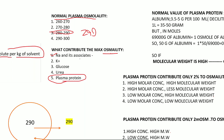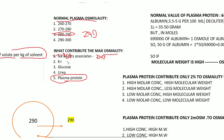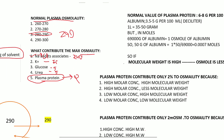What does 'sodium and its associates' mean? Sodium is always paired with chloride or bicarbonate. This combination contributes approximately 240 osmol. Potassium contributes very little because it lies in the intracellular compartment. Glucose contributes 5 osmol, urea contributes 5 osmol, and plasma protein contributes only about 2% of total osmolarity.